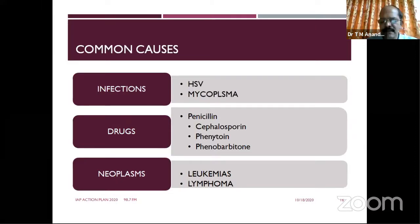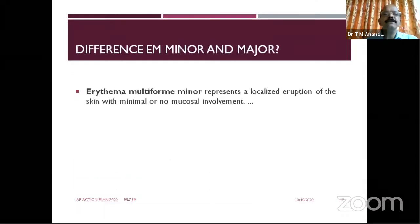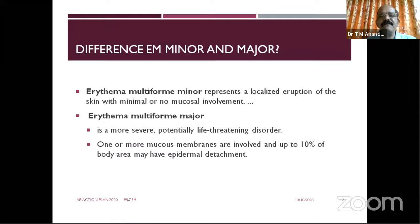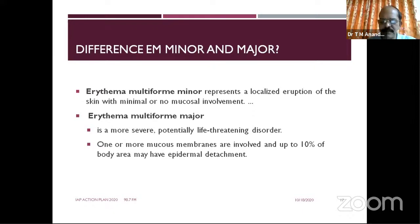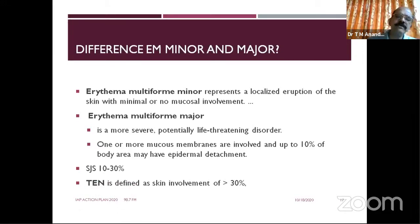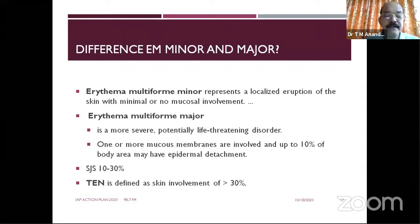To differentiate erythema multiforme minor and major: erythema multiforme minor has localized skin reduction and no mucous involvement. Erythema multiforme major may be more severe with mucous membrane involvement. According to body surface area involved: less than 10% is erythema multiforme, 10–30% is Stevens-Johnson syndrome, more than 30% is toxic epidermal necrolysis. Even erythema multiforme minor may be simple with good prognosis, while Stevens-Johnson syndrome is very severe.